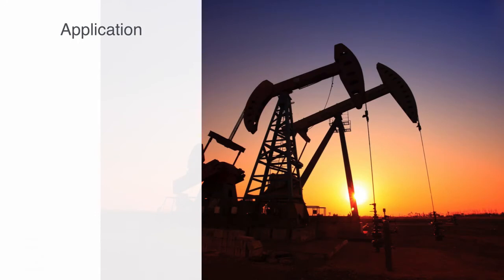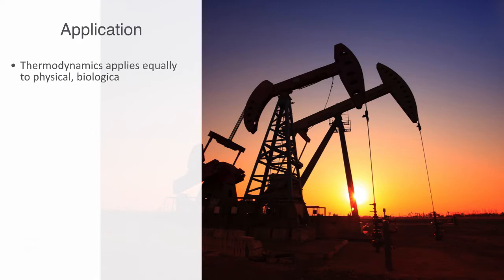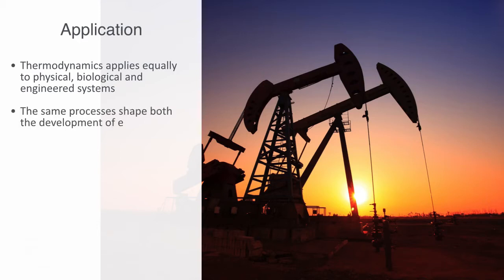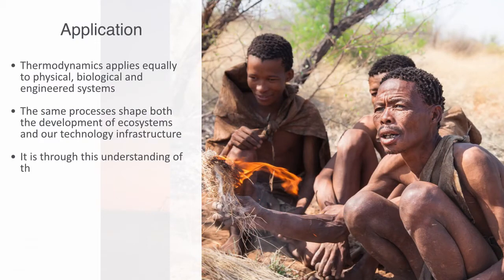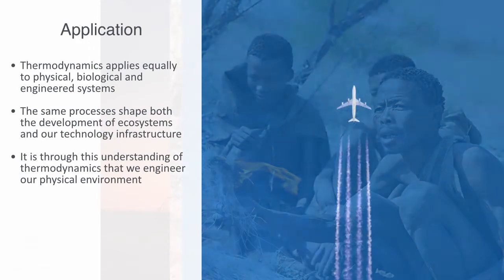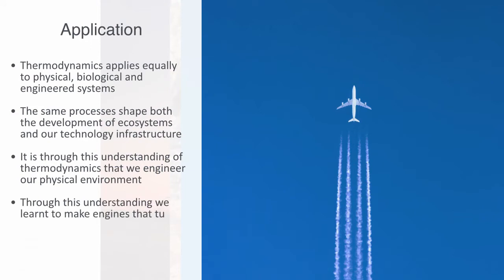One of the great benefits to having thermodynamics as the theoretical underpinnings to systems ecology is that it applies equally to physical, biological, and engineered systems, giving us an integrated framework for the rigorous modelling of both ecosystems and industrial economies. Through thermodynamics, we can see that the same processes shape both the development of ecosystems and our technology infrastructure. It is through this understanding that we have engineered our physical environment — we first learned to cook, and learned to shape metals through smelting, to produce steel by understanding the subtleties of these thermodynamic processes.